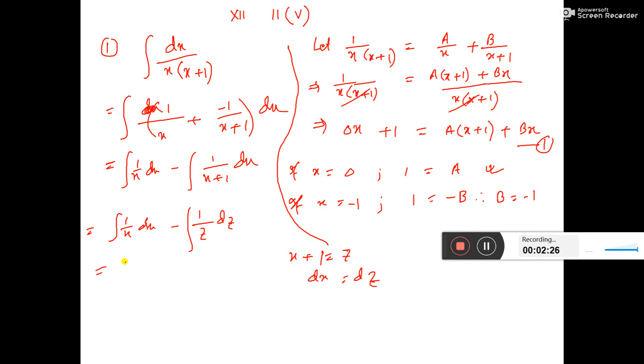Now if you integrate, this gives log mod x minus log mod z plus c, where c is the integration constant. Putting the value of z, which is x plus 1, the final answer is log mod x minus log mod x plus 1 plus c.